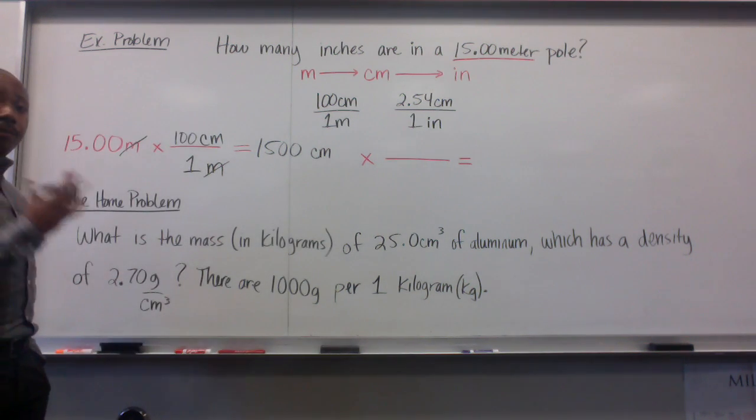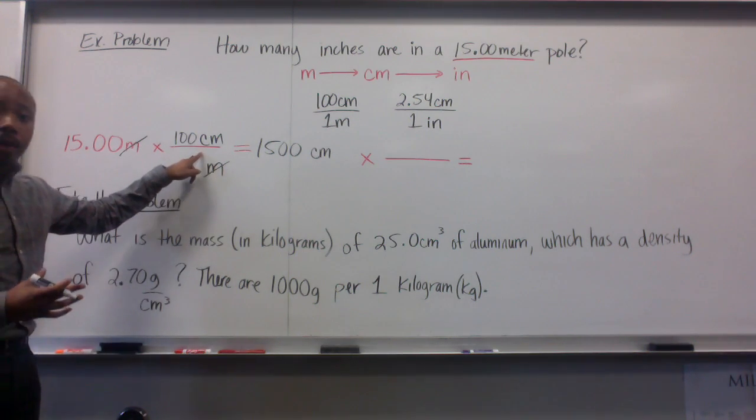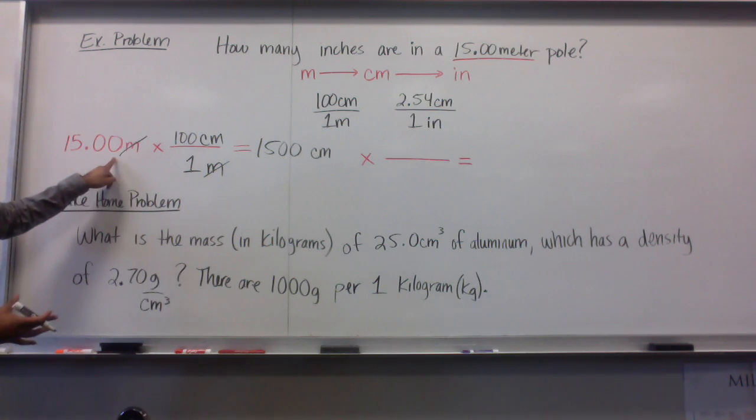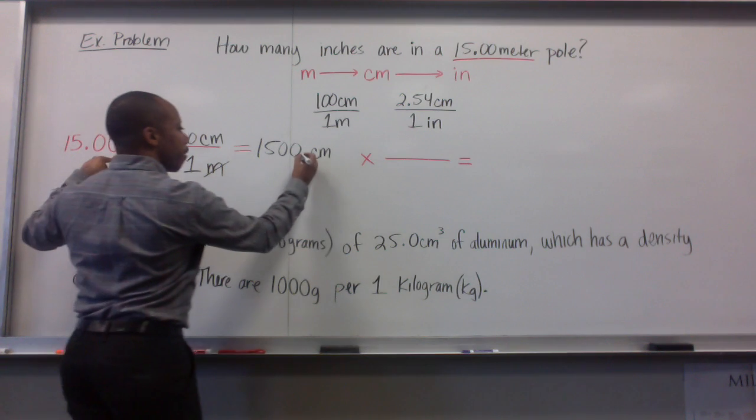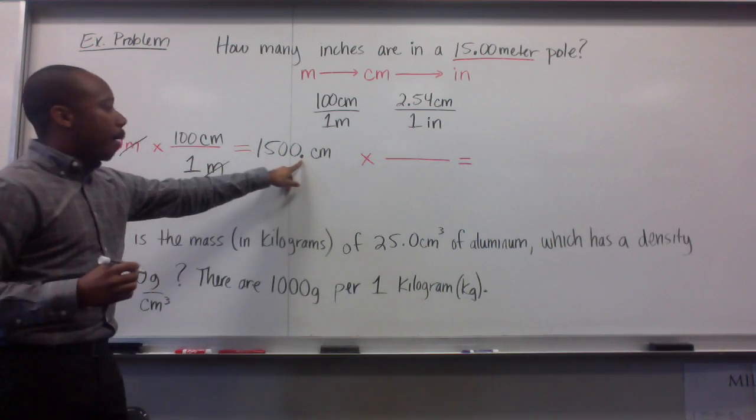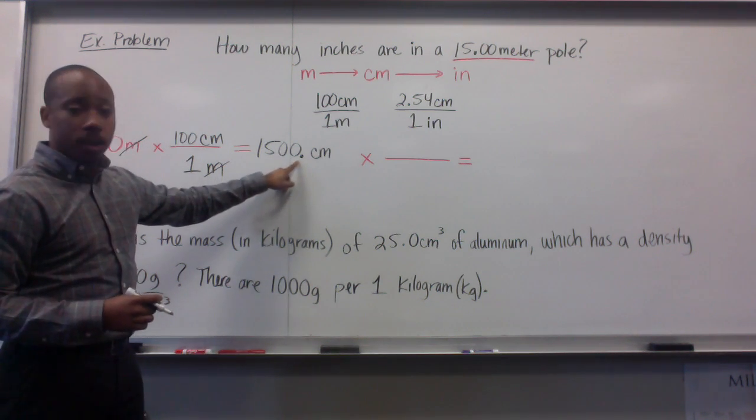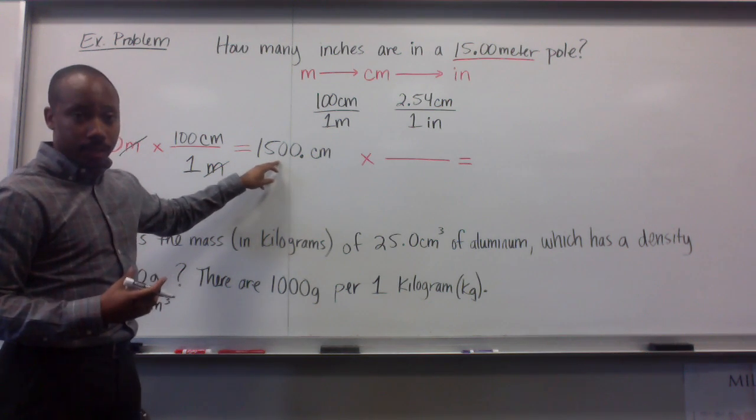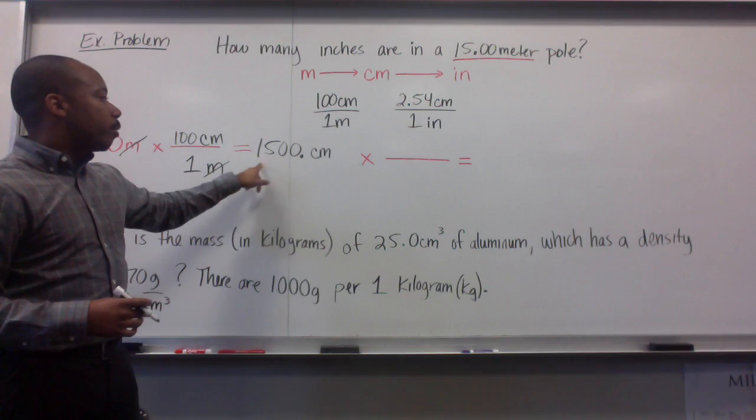Now, to keep my significant figures intact, this is a conversion factor. It's an exact number. Thus, it has an infinite amount of significant figures. So this will determine my number of significant figures. At 15.00, this will have four significant figures. I put a decimal place here just to represent that these zeros are significant. Without this decimal, they will be seen as insignificant.